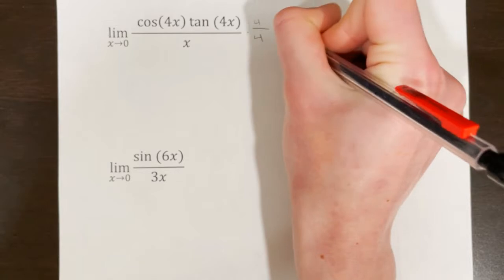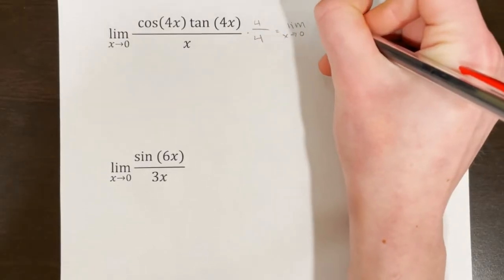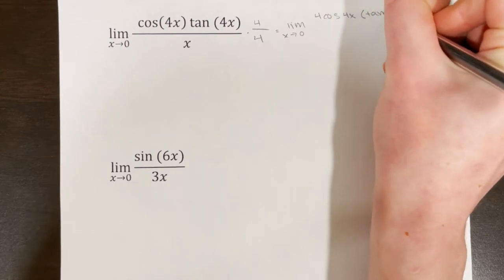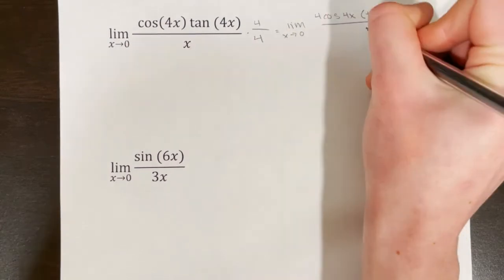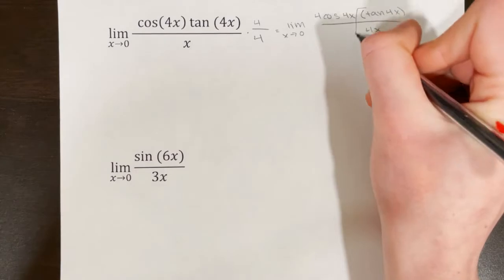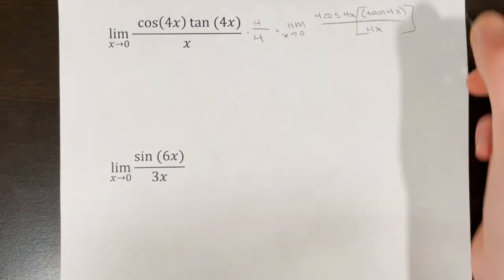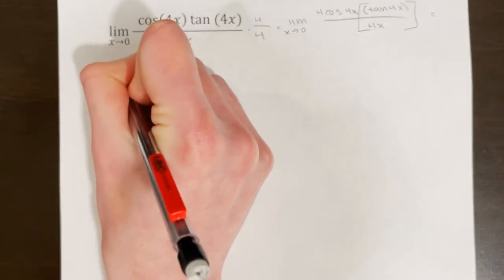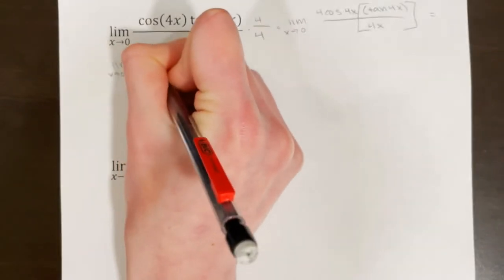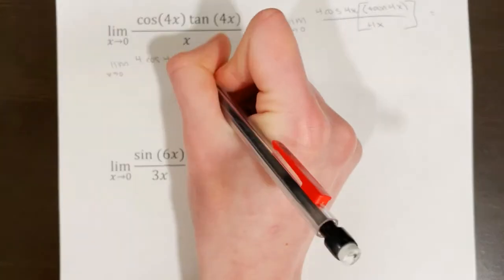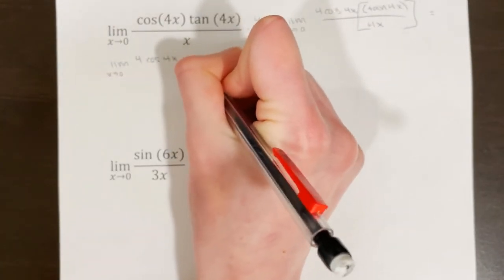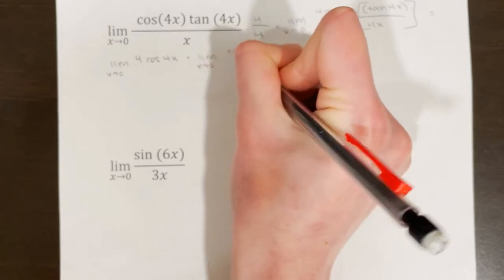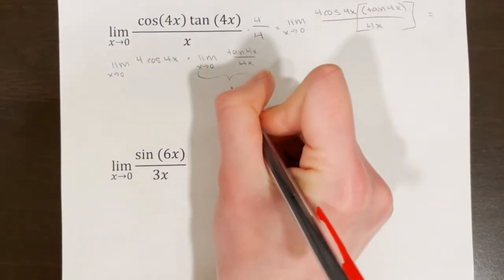And I will get the limit as x approaches 0 of 4·cos(4x)·tan(4x) over 4x. Now if I'm just looking at this chunk, this is something I can simplify into 1. So I'm going to break it into two separate limits: the limit as x approaches 0 of 4·cos(4x) times the limit as x approaches 0 of tan(4x) over 4x. I know that this one is equal to 1.